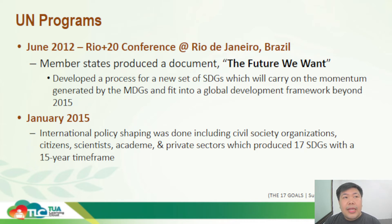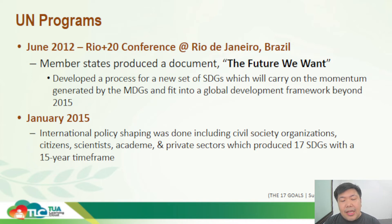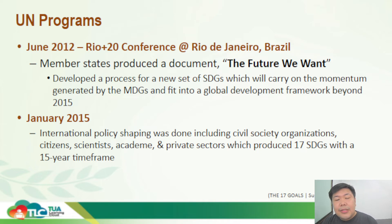They wanted to include as many minority groups and issues as possible. In January 2015, drafting of the new goals began — not only by heads of state but including civil society organizations, citizens, scientists, academia, and the private sector. Eventually they produced 17 Sustainable Development Goals with a 15-year time frame.